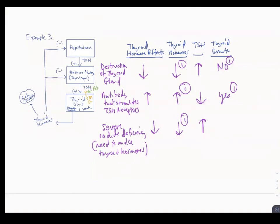This excess growth of the thyroid gland due to iodide deficiency is called a diffuse goiter, which will be discussed in another video on the thyroid axis. These examples highlight the importance of feedback, as there are many systems in the body with medical significance where understanding these feedback loops is essential for predicting hormone levels and physiological responses to disturbances.